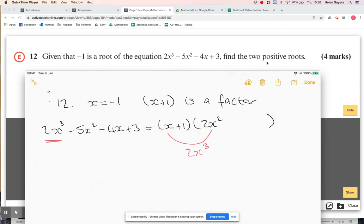I can use the same logic for the constant. The constant is plus three, so that's going to come from one times the constant in the quadratic, which must be three. That would give me plus three, which is what I want. Those are the easier ones. Then I need to find that missing middle term, the x term from the quadratic.